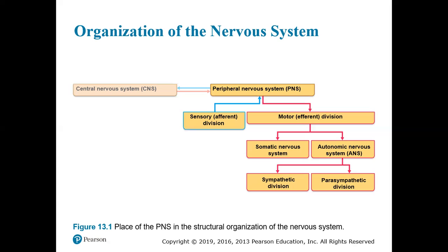When we get into that motor efferent division, that is broken into the somatic nervous system and autonomic. The autonomic nervous system is of the motor division of the PNS, and we break it into sympathetic and parasympathetic. The sympathetic nervous system is primarily in charge of fight-or-flight responses, whereas the parasympathetic nervous system is in charge of rest-and-digest responses. So sympathetic: fight or flight; parasympathetic: rest and digest.